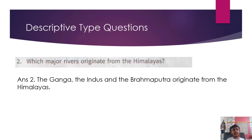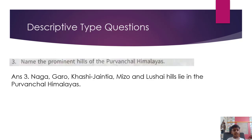Which major rivers originate from the Himalayas? Answer: The Ganga, the Indus, and the Brahmaputra originate from the Himalayas. Name the prominent hills of the Purvanchal Himalayas. Answer: Naga, Garo, Khasi, Jaintia, Mizo, and Lushai hills lie in the Purvanchal Himalayas.